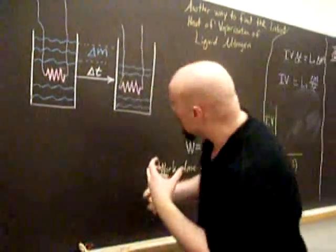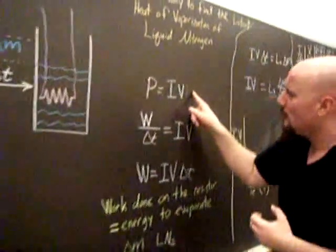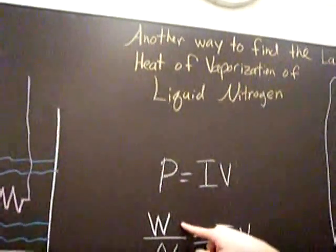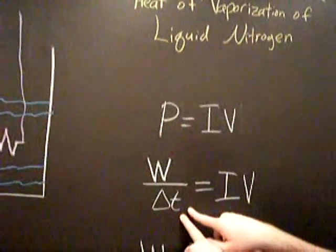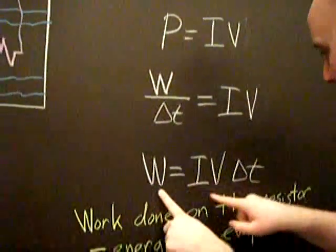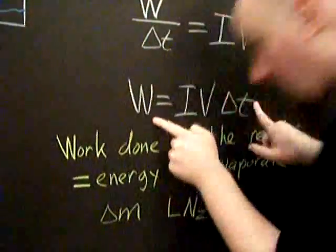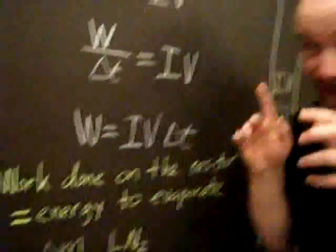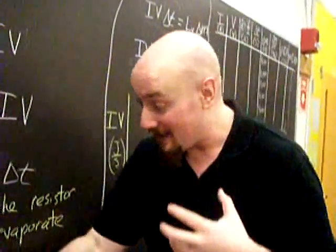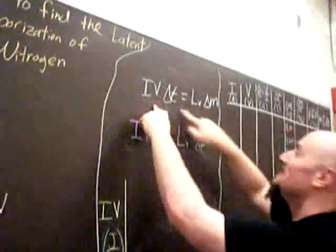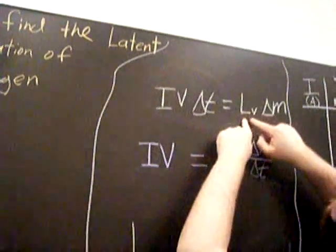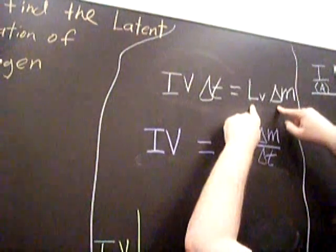So let's see what equations we need. Well, let's start with that power, the P=IV that I talked about. The power is just the work divided by the change in time. So then the work done on the resistor is IV delta T. And that work will be equal to the energy required to evaporate the delta M of liquid nitrogen, which is this. The IV delta T will equal the latent heat of vaporization of liquid nitrogen. That's what we want, times the delta M.